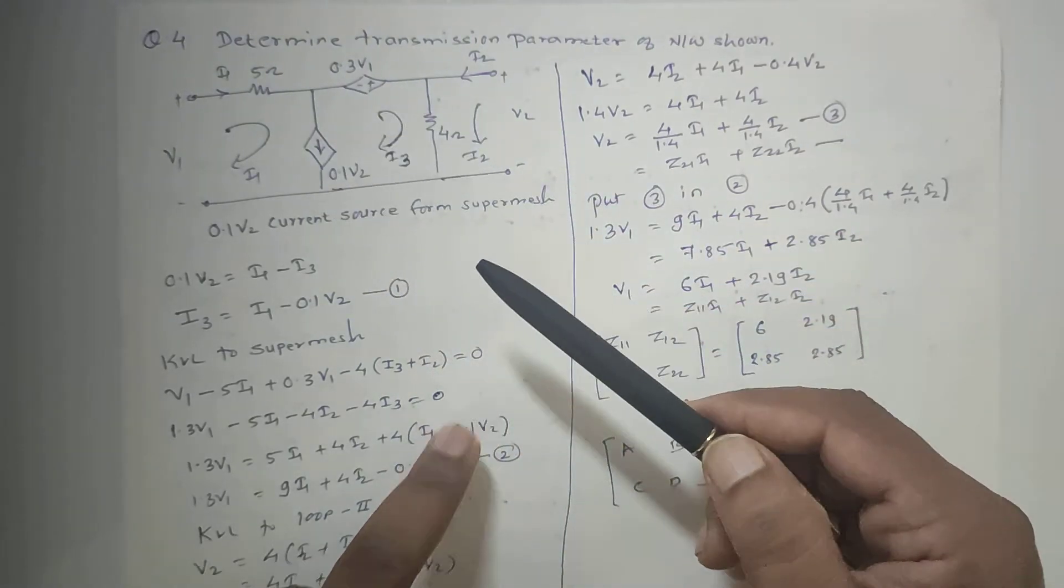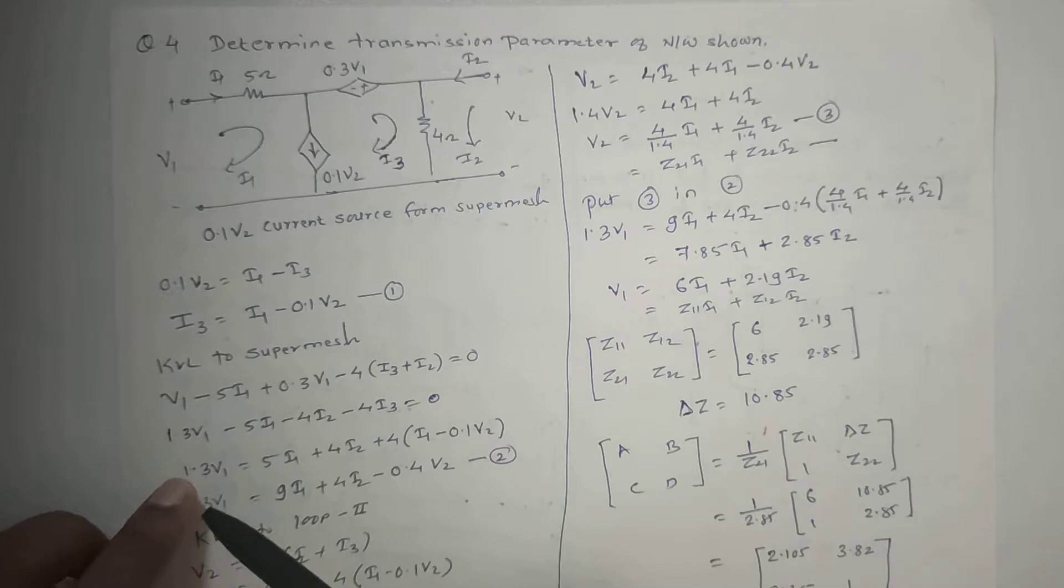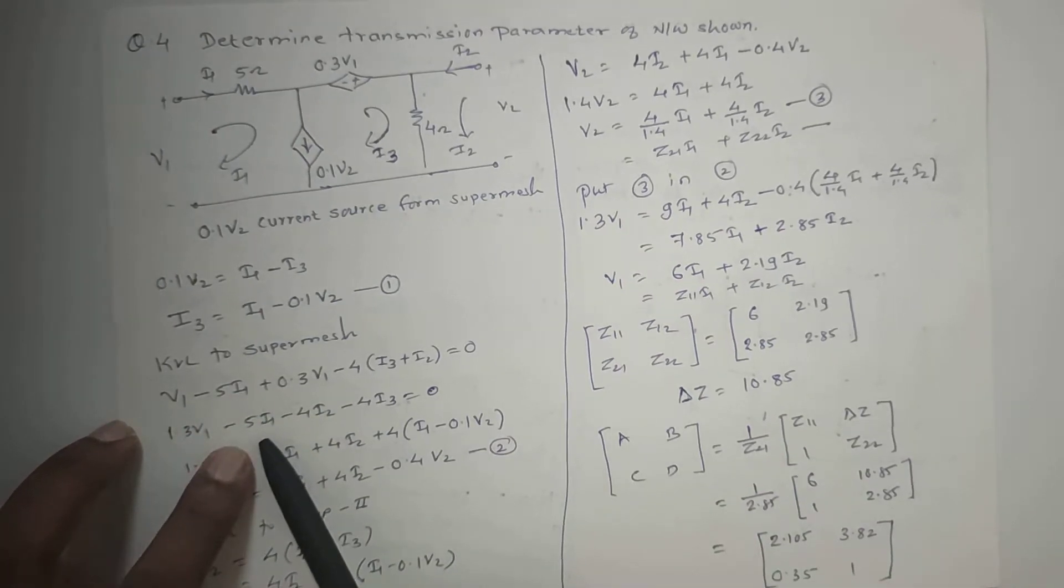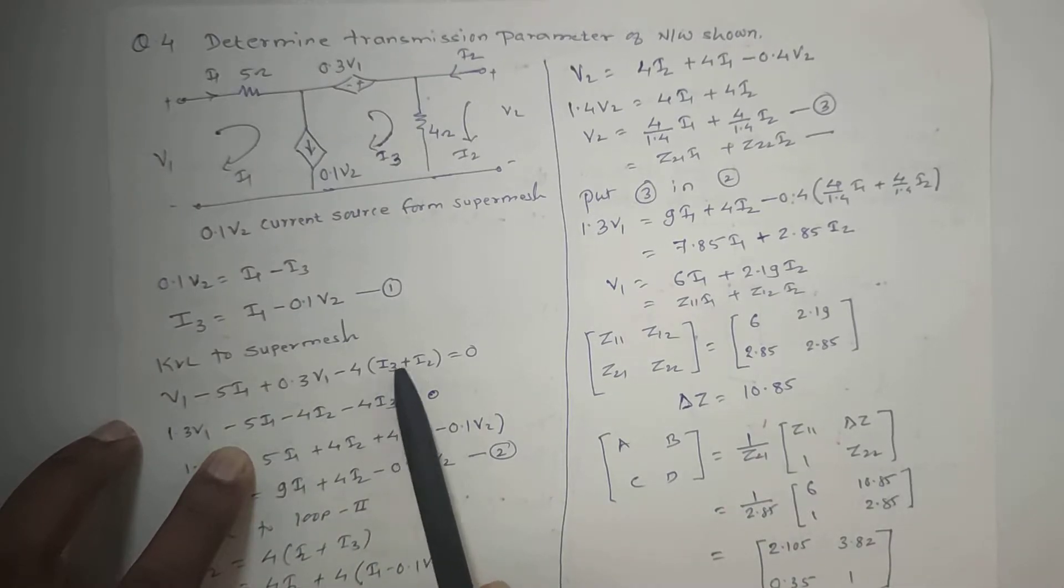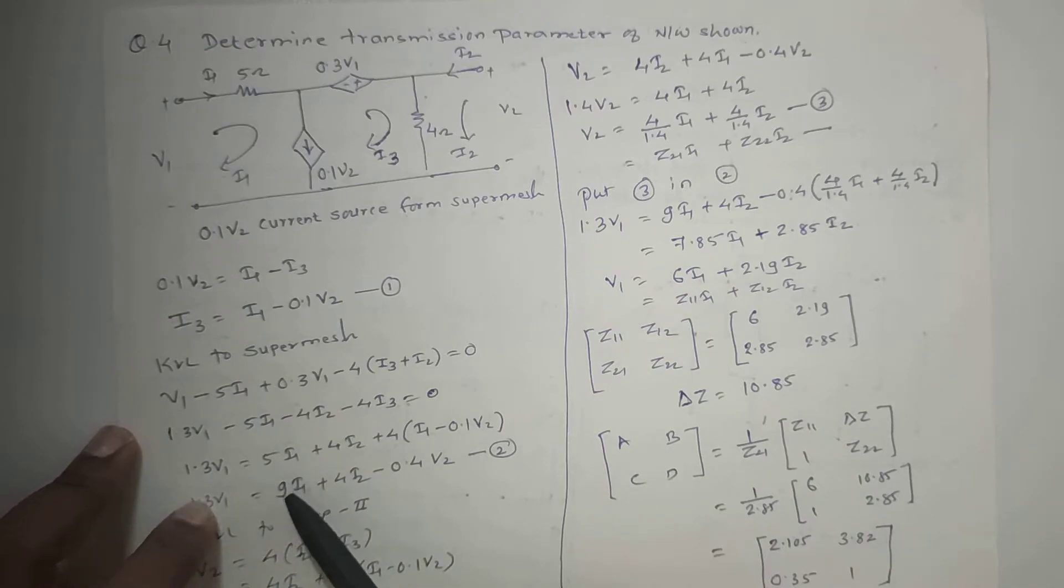1.3V1 minus 5I1 minus 4I2 minus 4I3 equals 0. If we simplify this, we know I3 in terms of I1 and V2.